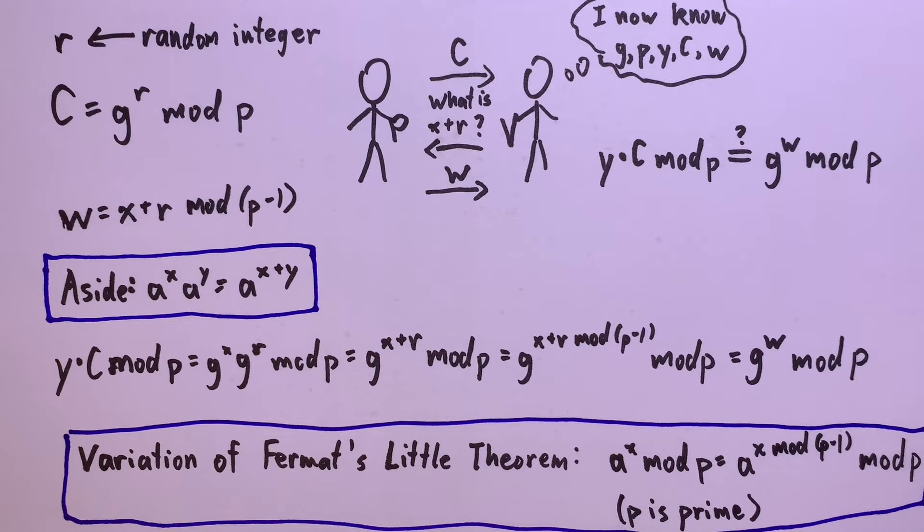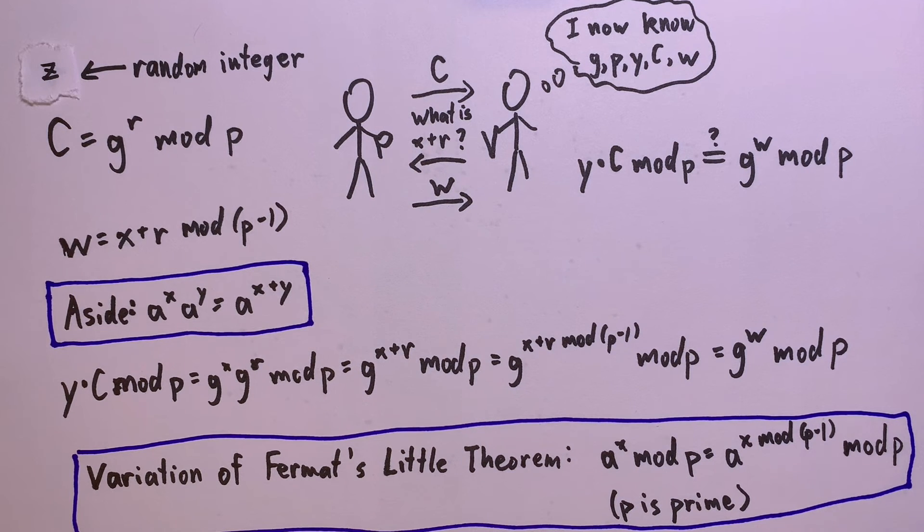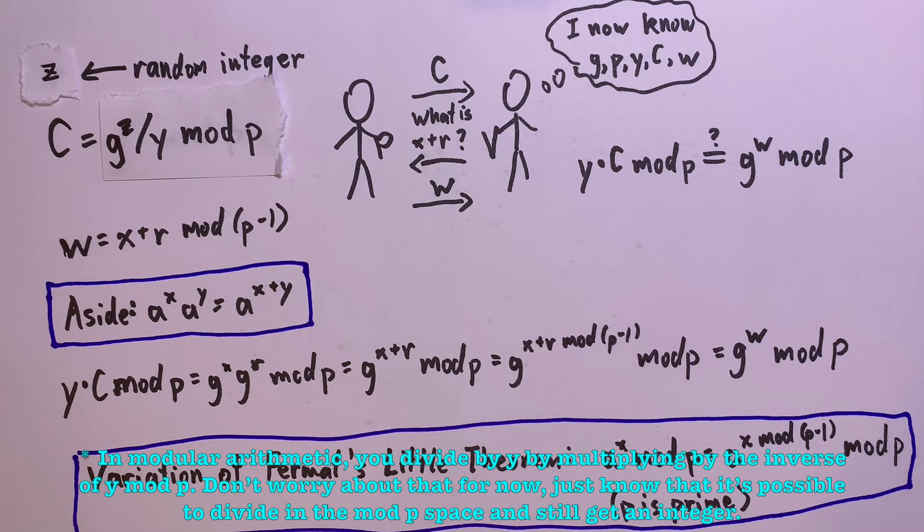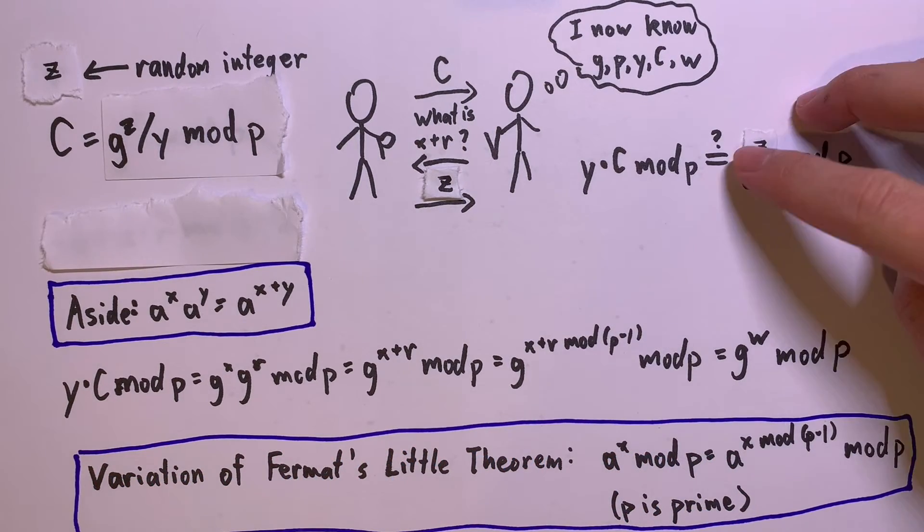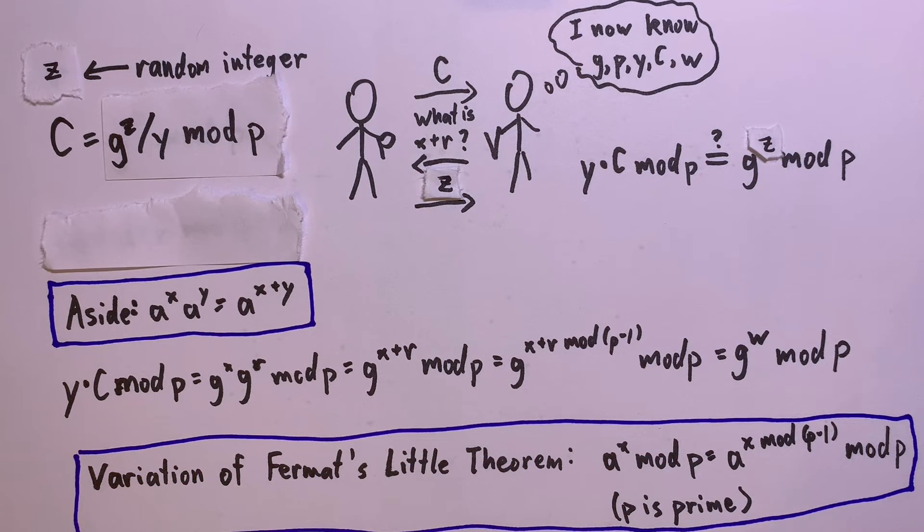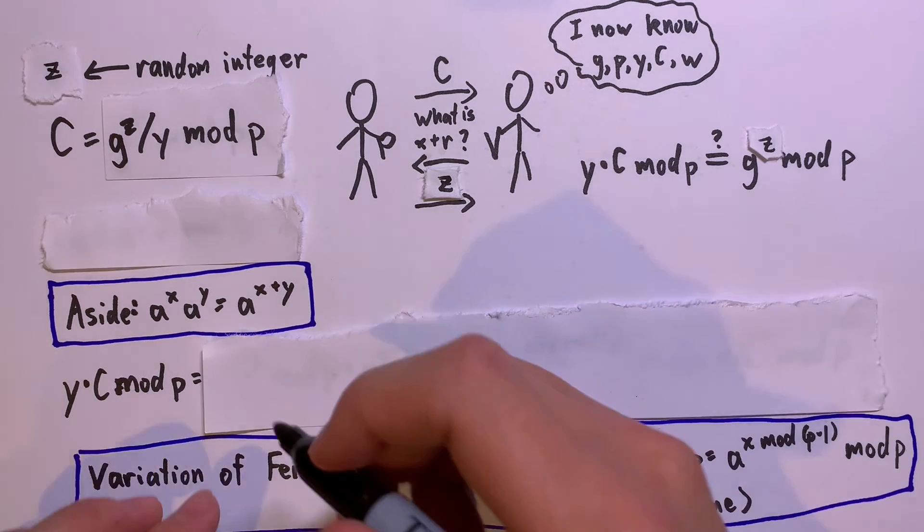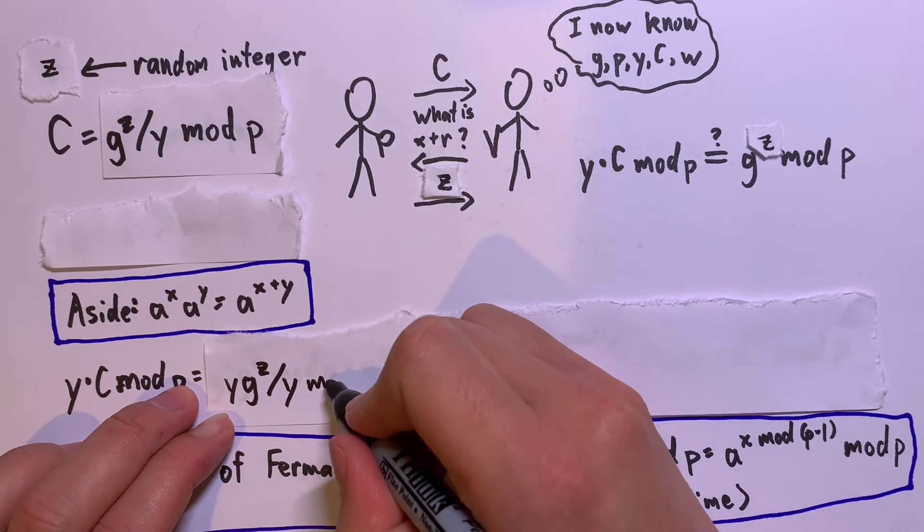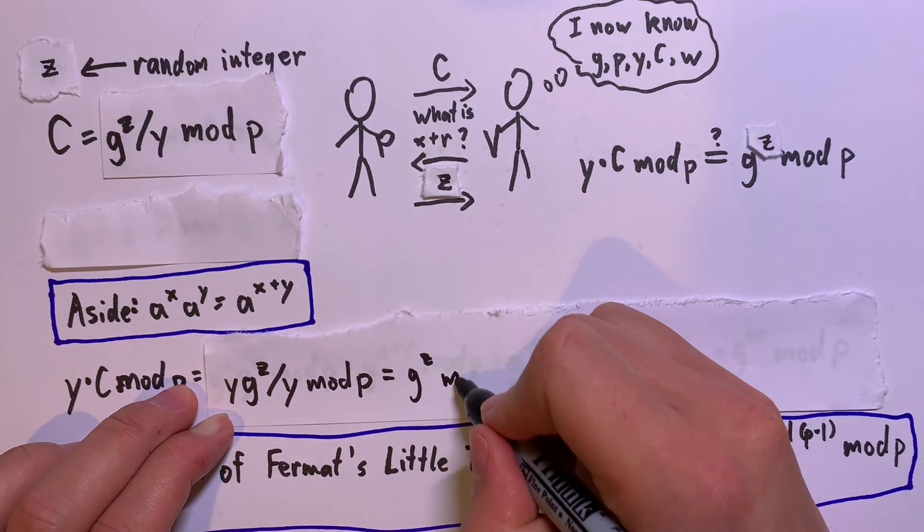But wait, there's actually a way to cheat. You could have chosen a random z, and then calculated c to be g to the z divided by y mod p. For the question of what w is, you send in z. Then you don't actually know what x or r is, but your z and c pass the test. y times c mod p equals y times g to the z divided by y mod p, which is just g to the z mod p.